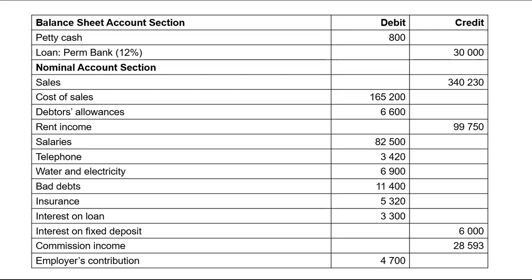Note that interest on loan and interest on fixed deposit are not recorded under other operating expenses. Interest on fixed deposit is recorded at the bottom of the income statement as interest income, and interest on loan is recorded at the bottom as interest expense.